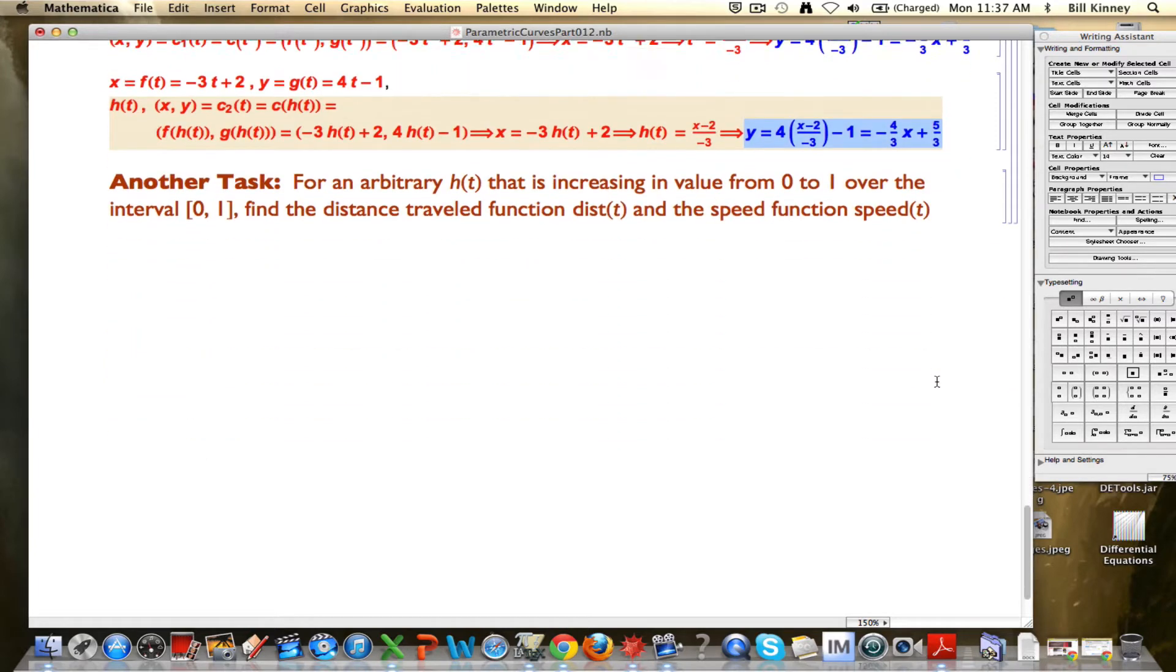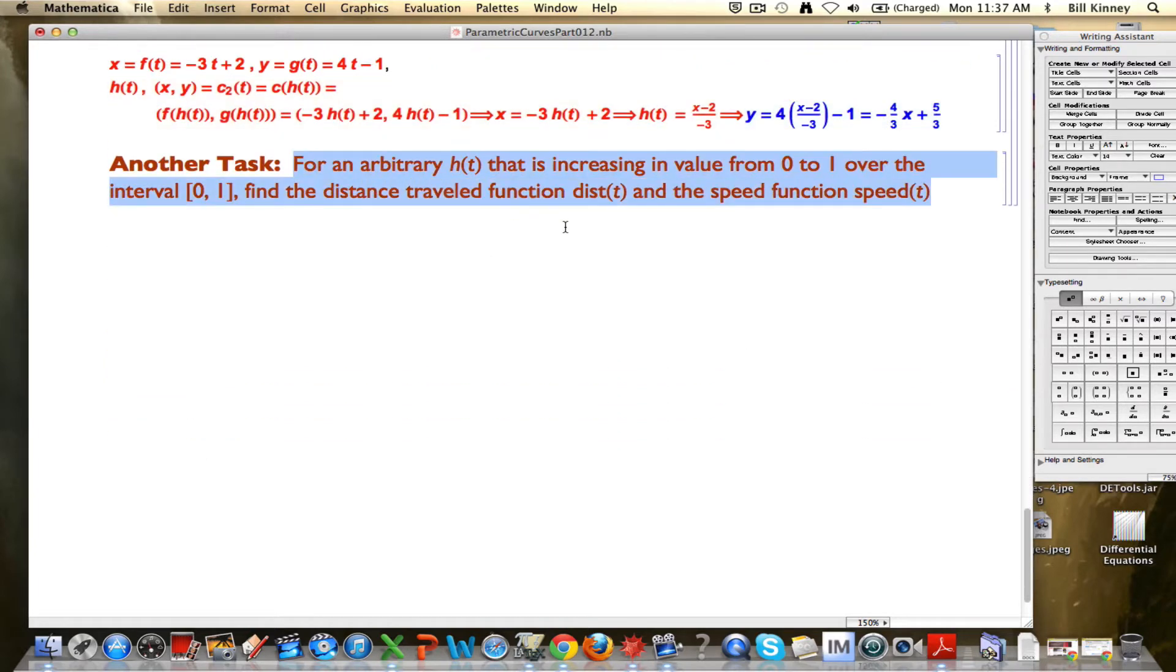For this video, our task is to do the following. For an arbitrary function h of t, well, it's not completely arbitrary, it's going to increase in value, so the outputs are going to go from 0 to 1 over the interval, the time interval from 0 to 1. Find the distance traveled function that I called dist of t, and the speed function that I called speed of t. I would encourage you to pause the video right now and try to figure these things out on your own.